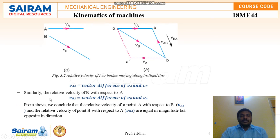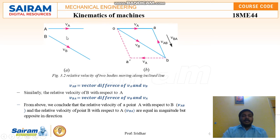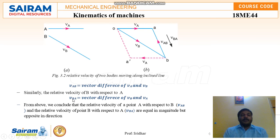Similarly, the relative velocity of B with respect to A: vector V_BA equals the vector difference of Vb and Va. From both the parallel and inclined line cases, we can conclude that the relative velocity of point A with respect to B and the relative velocity of point B with respect to A are equal in magnitude but opposite in direction.